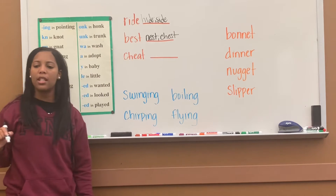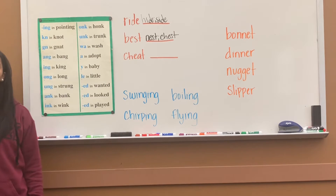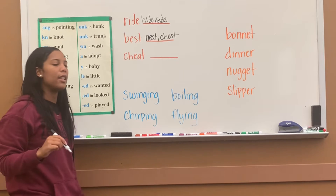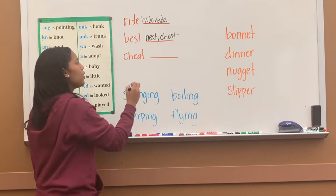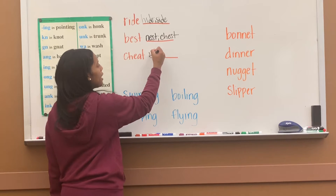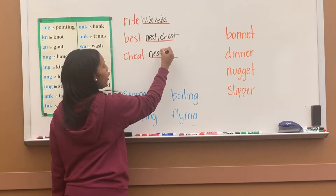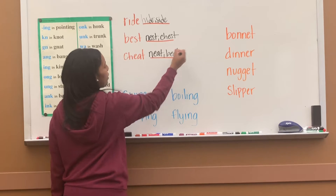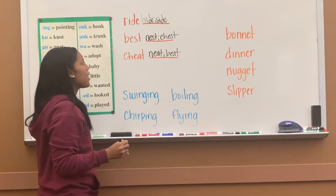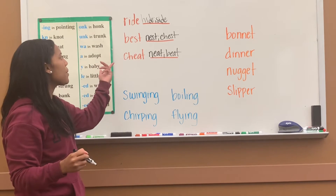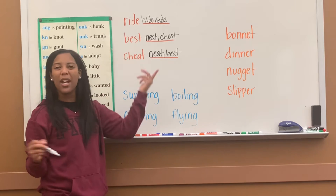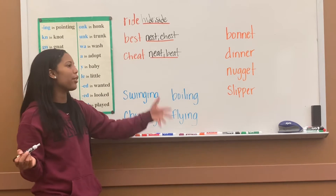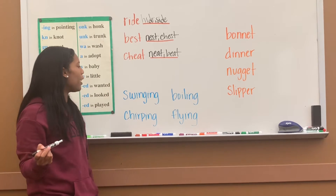'Cheat.' What words have that 'eat' sound at the end? You could say 'meet' or 'beat.' Rhyming words — you see most of the time they'll have some of the same exact letters, which makes it easier to spell them out.